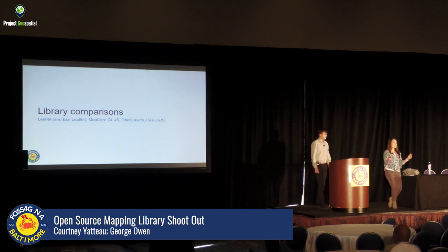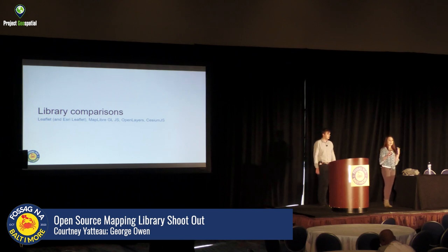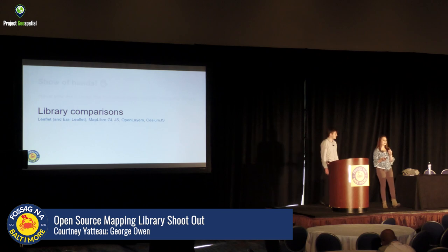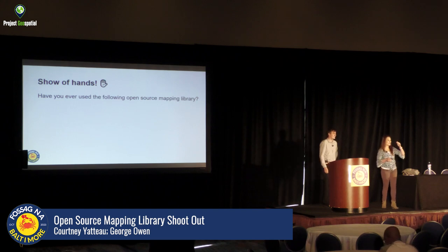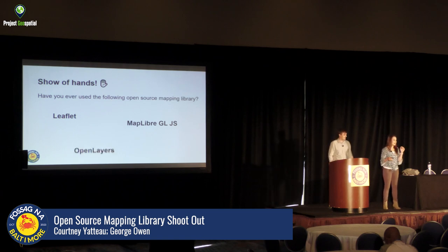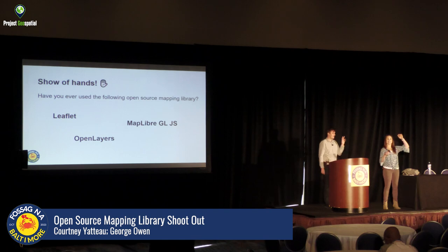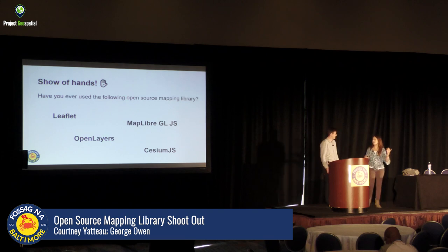Let's get into the library comparisons. We're going to go through Leaflet with Esri Leaflet, MapLibre GL JS, OpenLayers, and Cesium JS, comparing dimensional map support, data support types, data styling, library file sizes, and community involvement. Show of hands — how many have used Leaflet? MapLibre GL JS? OpenLayers? Cesium JS? Great — we have a good variety.